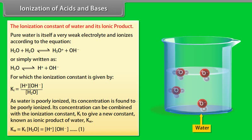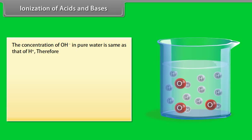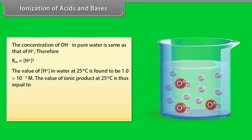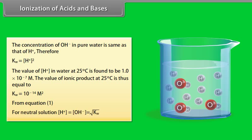The concentration of OH⁻ in pure water is the same as that of H⁺; therefore Kw equals [H⁺]². The value of [H⁺] in water at 25°C is found to be 1.0 × 10⁻⁷ M. The value of the ionic product at 25°C is thus equal to 10⁻¹⁴ M².